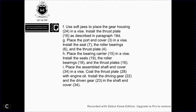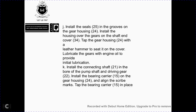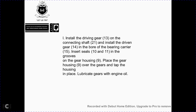Install driver gear 22 and driving gear 23 on the shaft end cover 34. Install seals 25 in the groove of rear gear housing 24. Install the housing with gear on the shaft end cover 34, and gear housing 24 with a leather hammer to seat it on the cover. Lubricate the gears with engine oil for initial lubrication. Install the connecting shaft 21 in the bore of the pump shaft with driving gear 22. Install bearing carrier 15 on gear housing 24, lining up with the scribe mark, and tap bearing carrier 15 into place. Install drive gear 13 on connecting shaft 21. Install driving gear 24 in bore carrier 15. Install seal stand 11 in the groove of gear housing 9. Place gear housing 9 over the gears and tap the housing into place. Lubricate the gears with engine oil.